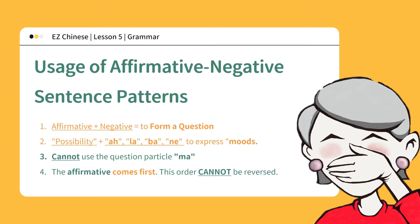For example, modal particles such as 啊, 啦, 吧, 呢, and others soften a statement's tone. However, you cannot use the question particle 吗. The affirmative always comes first, followed by the negative. This order cannot be reversed.